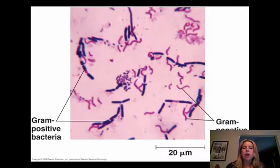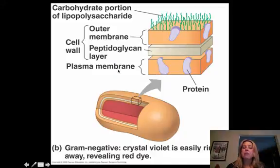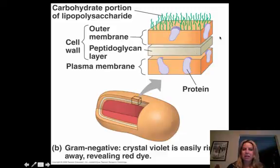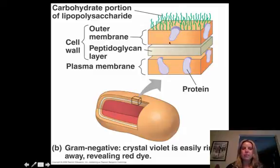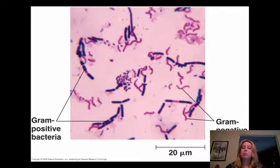Gram positive bacteria will look purple underneath the microscope. The pinkish ones are gram negative bacteria. Gram negative bacteria have a different setup — they have a cell wall, visible in that off-white color, but it's very thin and way more complex, with a membrane on the outside. In the gram staining process, crystal violet doesn't get absorbed and gets rinsed off, so gram negative bacteria look pink under the microscope.